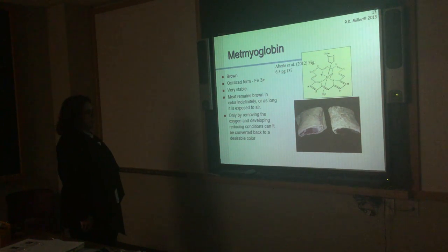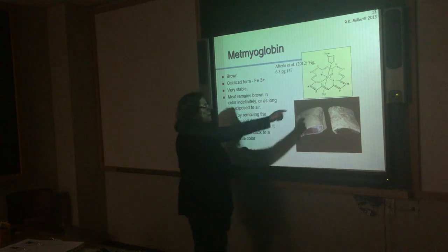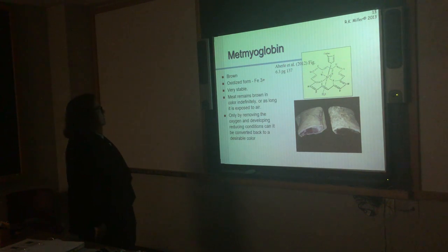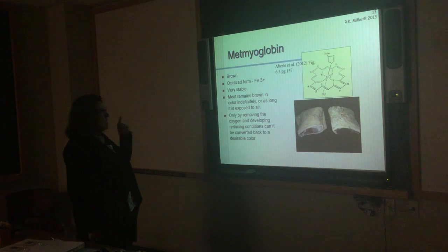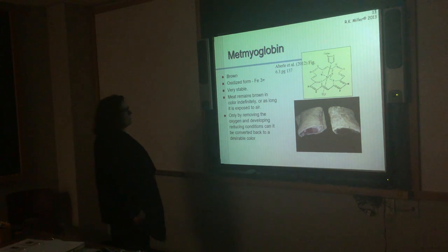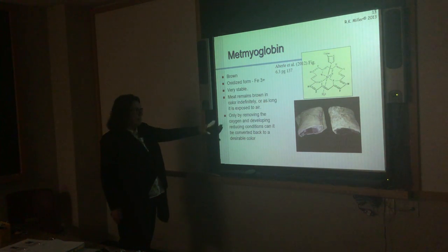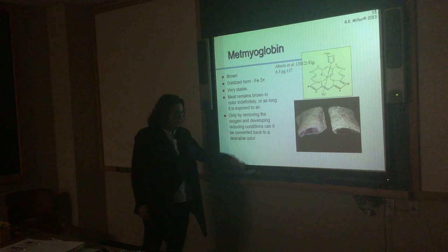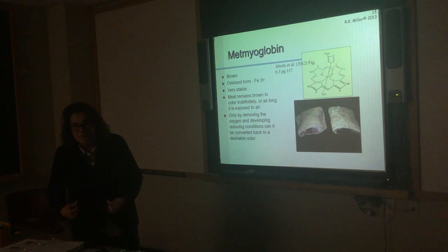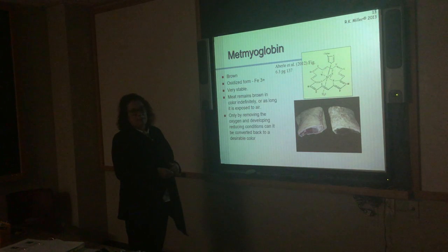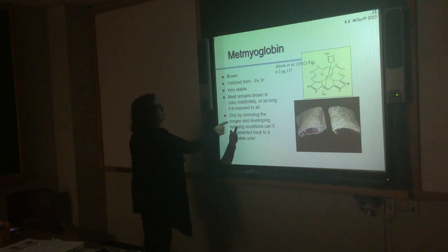Metmyoglobin is the oxidized form — Fe³⁺. We've taken away an electron from the iron in the heme. It's brown in color and very stable — it's hard to get metmyoglobin to change. The meat will remain brown in color indefinitely as long as it's exposed to air. You can remove oxygen and develop reducing conditions and convert it back to a desirable color, but we're not legally allowed to add reducing compounds to meat because metmyoglobin is also an indication of microbial growth and spoilage.